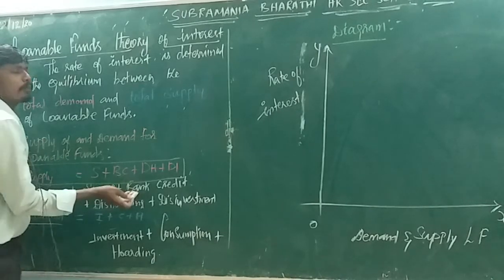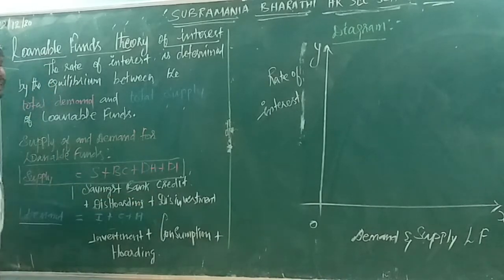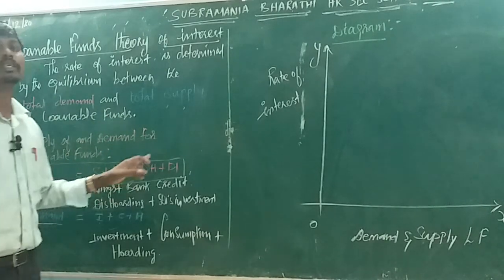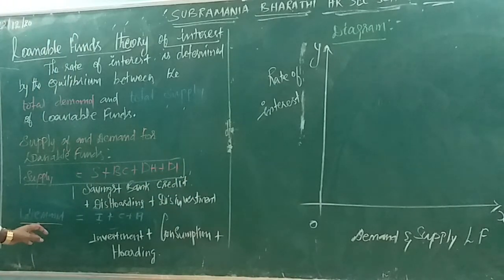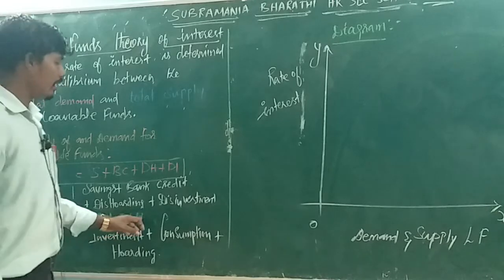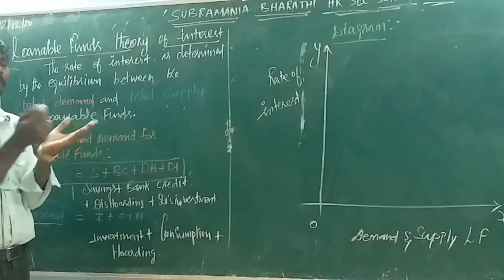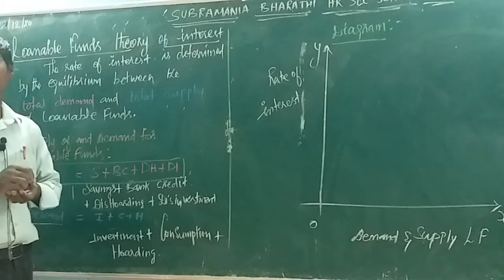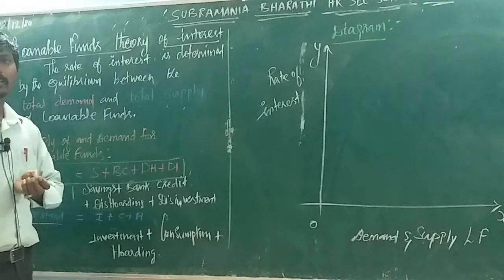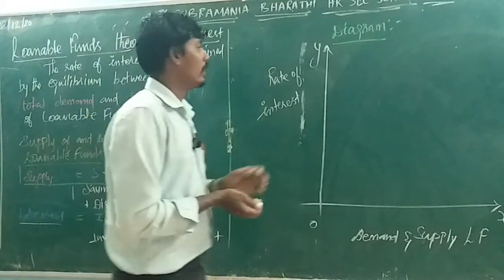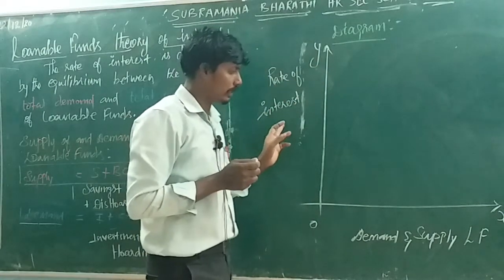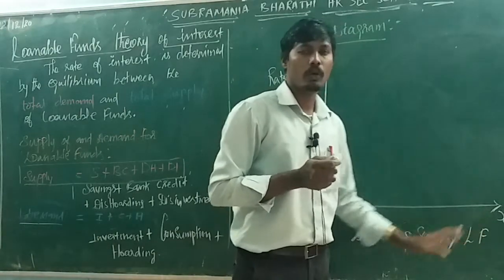To summarize: the supply of loanable funds is S plus BC plus DH plus DI, and the demand for loanable funds equals I plus C plus H. In the diagram, the Y-axis shows the rate of interest, and the X-axis shows the demand and supply of loanable funds.